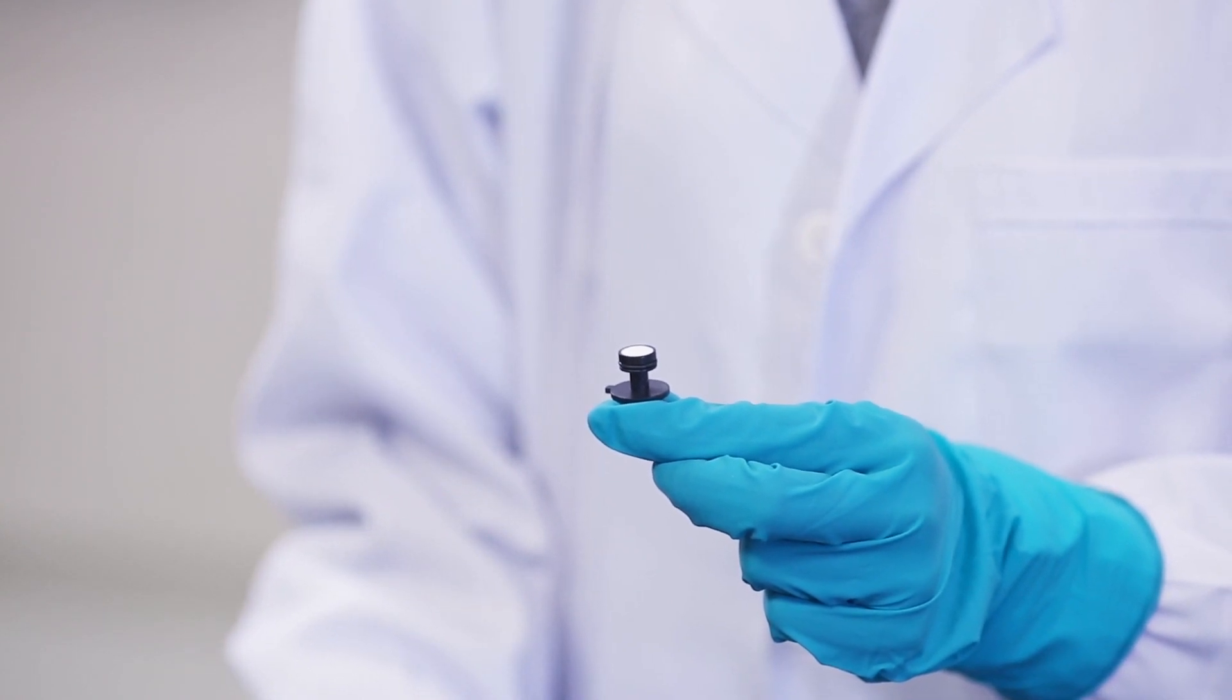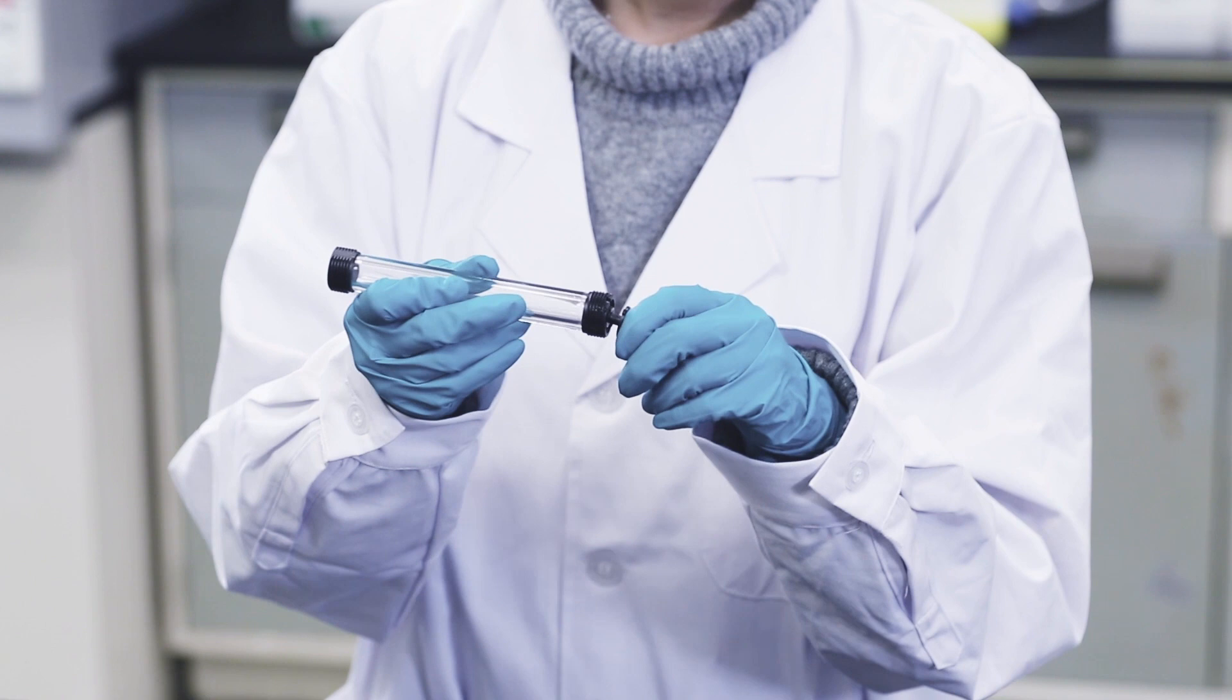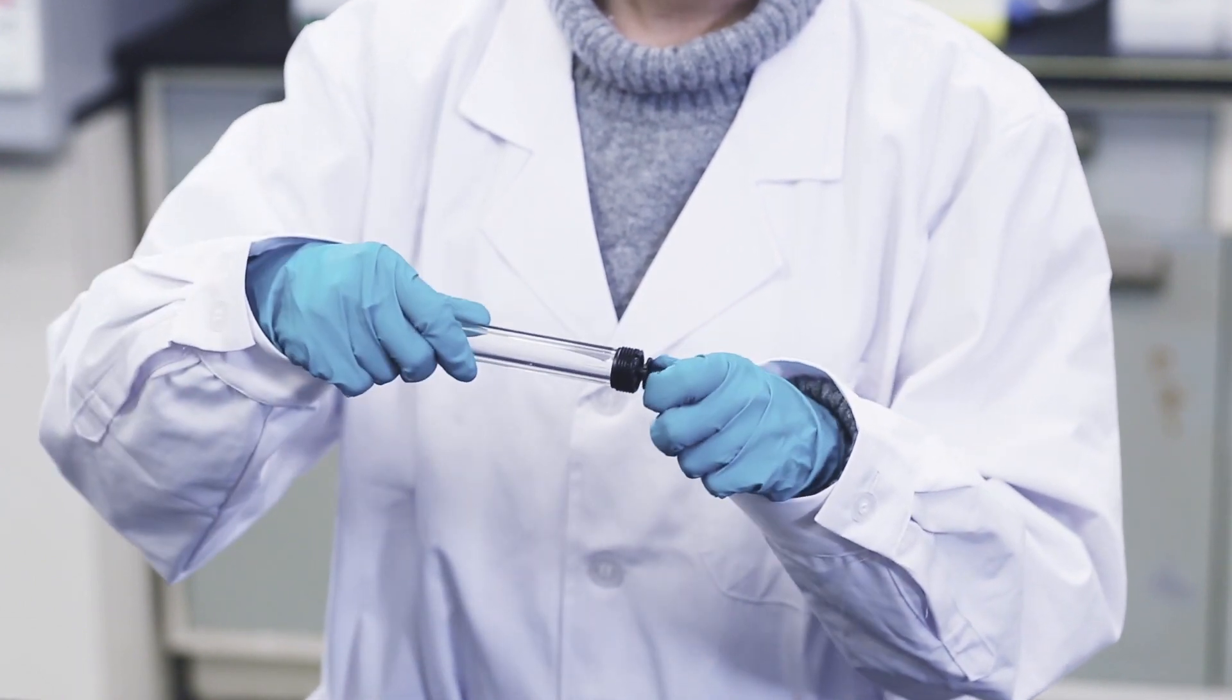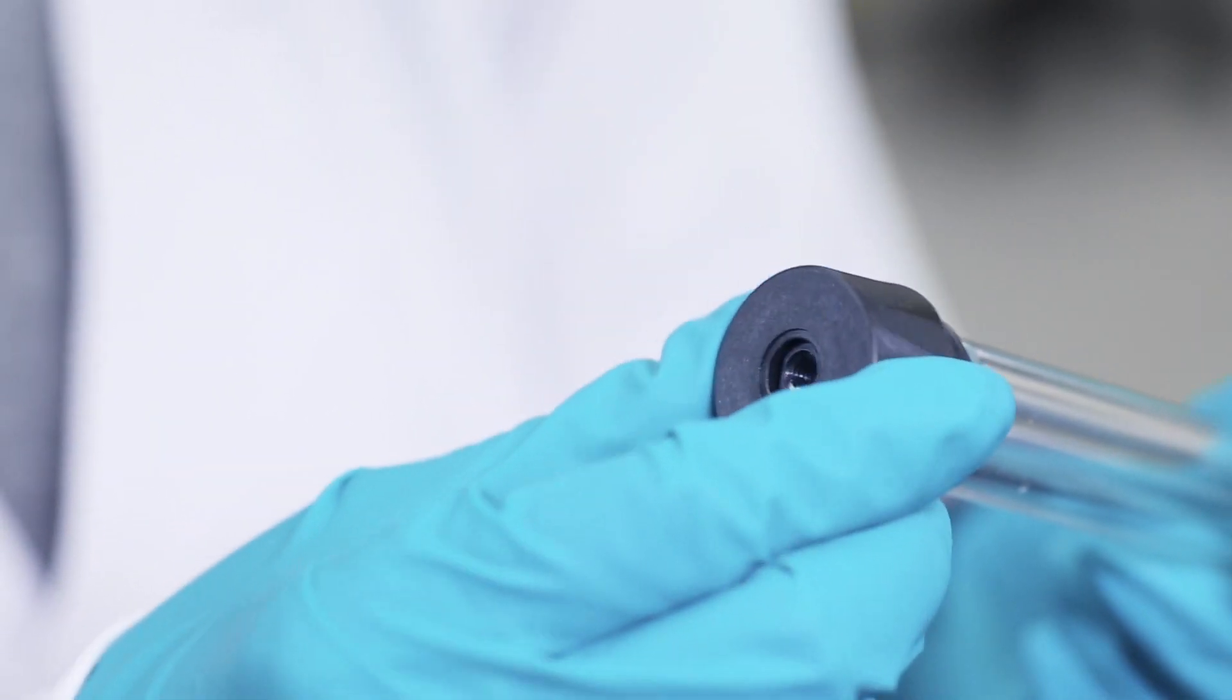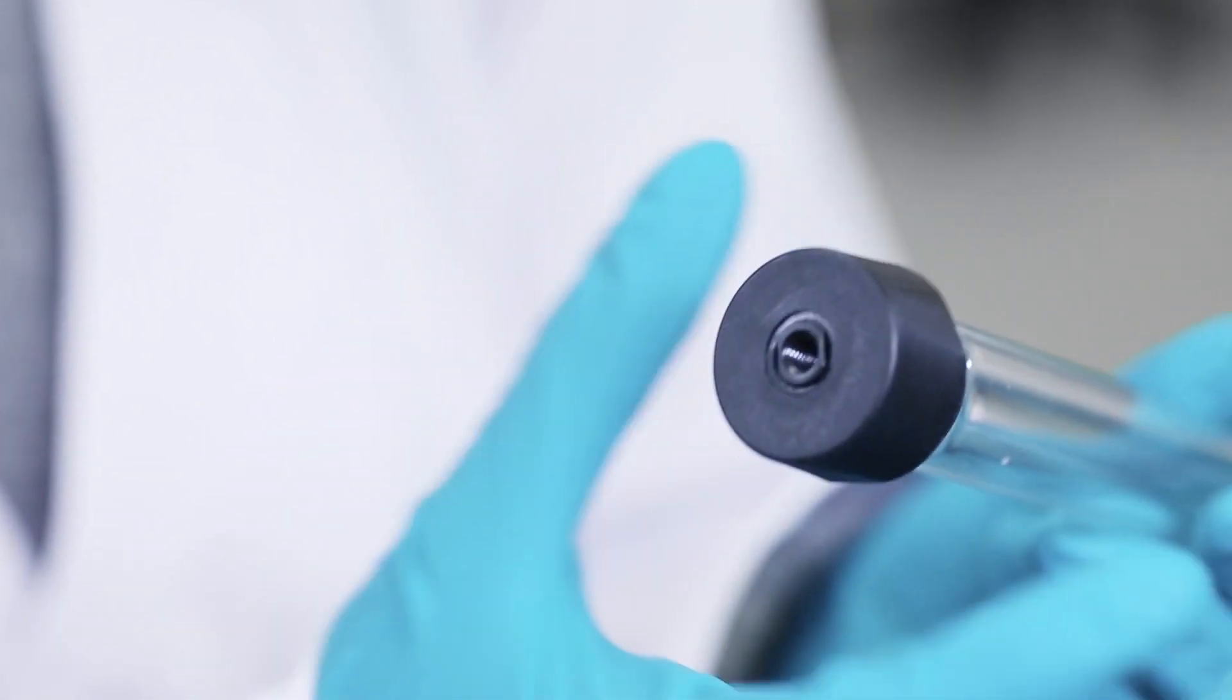Tamp the filter down with the filter tool to make sure it is securely in place. Attach the bottom unit to the end of the column and secure it with the threaded end piece.